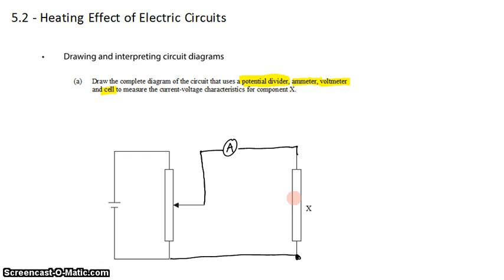So we can apply different voltages to component X by changing the position of the potentiometer. And in doing so, we'll get different currents, which we'll measure with this ammeter.